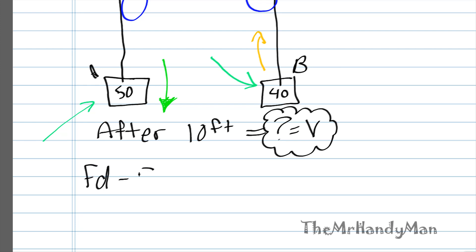FD minus FD. So, I mean, you simply just plug in. First you'll have your 50 times 10 feet, because that's how far it's going to be displaced, minus 40 times the displacement. And when you figure that out,